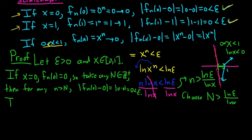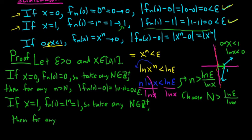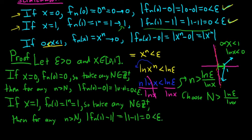Case 2: If x = 1, then f sub n(1) = 1^n = 1. Again take any positive integer N. Then for any little n > N, we have |f sub n(1) − 1| = |1 − 1| = 0 < epsilon. The proof is done in the case x = 1.